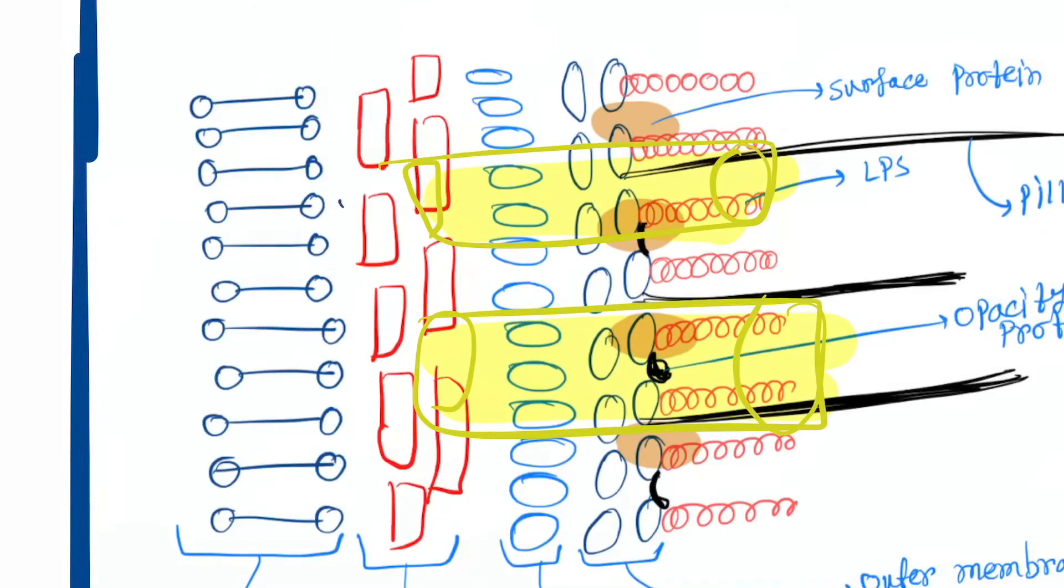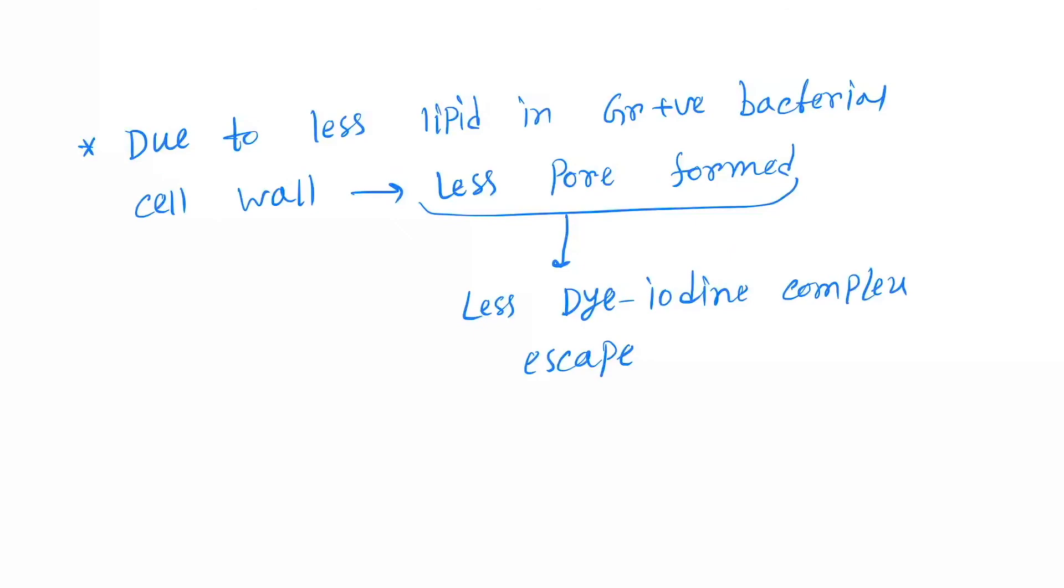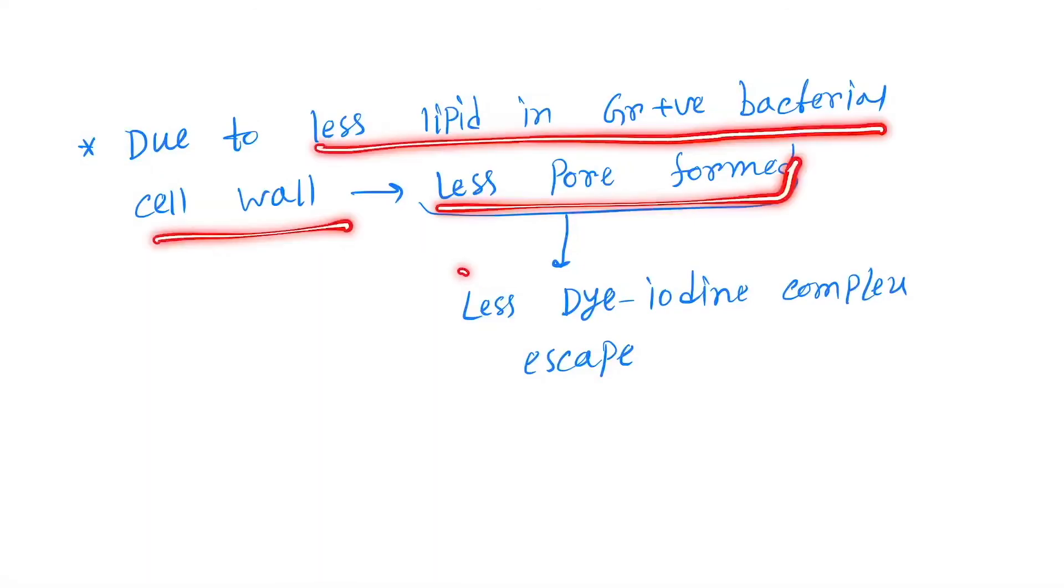But in case of gram positive bacteria, due to less lipid in the cell wall, less pores are formed, so less dye-iodine complex escapes.